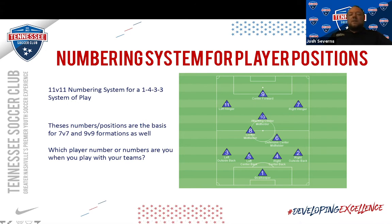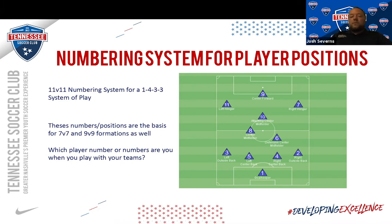This presentation is two parts. The first covers the numbering system and player positions and how they fit into various systems of play — whether it be 7v7, 9v9, or 11v11. The second part will be on the roles for those positions and key attributes of players in those specific spots on the field. You can see here the numbering system for a 1-4-3-3 system of play. Hopefully most of your coaches have used this numbering system for all ages in our club.